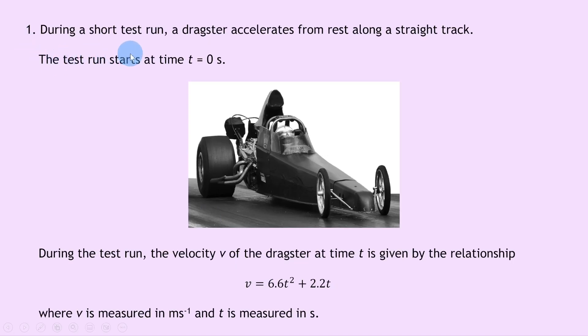Question 1 says during a short test run, a dragster accelerates from rest along a straight track. The test run starts at time t equals 0 seconds. During the test run, the velocity v of the dragster at time t is given by the relationship v equals 6.6t squared plus 2.2t, where v is measured in meters per second and t is measured in seconds.